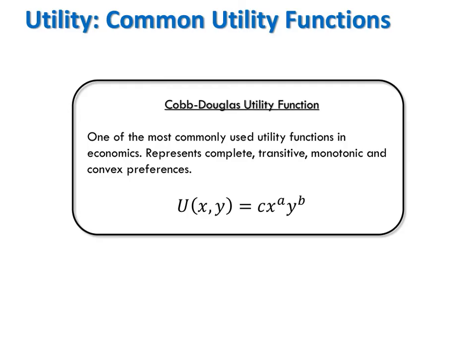One of the most commonly used utility functions in economics is the Cobb-Douglas utility function. This function represents complete, transitive, monotonic, and convex preferences. Cobb-Douglas utility functions take the form U equals some constant c times good x raised to the power a times good y raised to the power b. All of these constants a, b, and c are positive. We will explore more properties of Cobb-Douglas utility functions in the classes ahead.